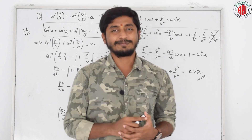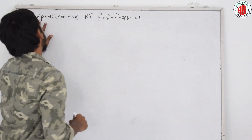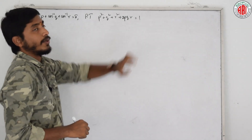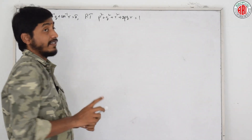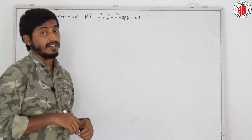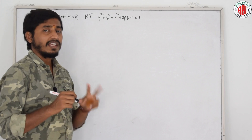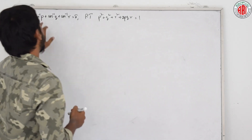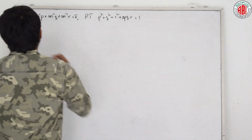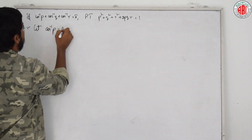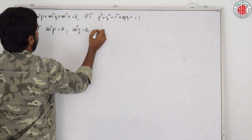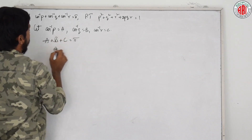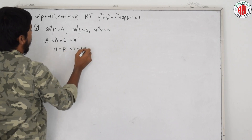Shall we move on to the next problem? The next question is: cos inverse p plus cos inverse q plus cos inverse r equals pi. Then prove that p square plus q square plus r square plus 2pqr equals 1. We can solve this in different ways. Let us take cos inverse p as A, cos inverse q as B, cos inverse r as C. Then A plus B plus C equals pi, so A plus B equals pi minus C.